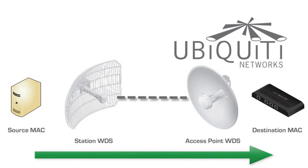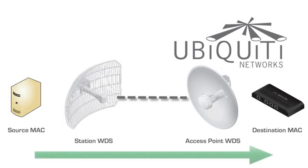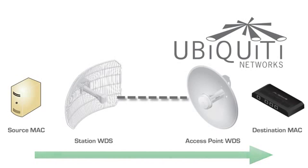WDS is not designed to interoperate between radio vendors, so using two Ubiquiti radios, users can pass virtually all traffic across wireless links.